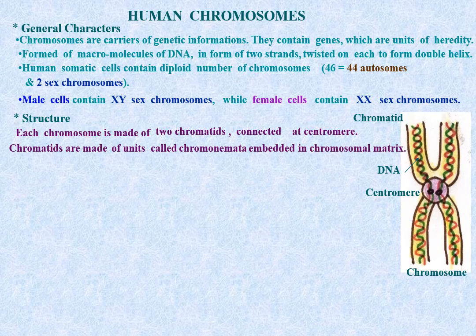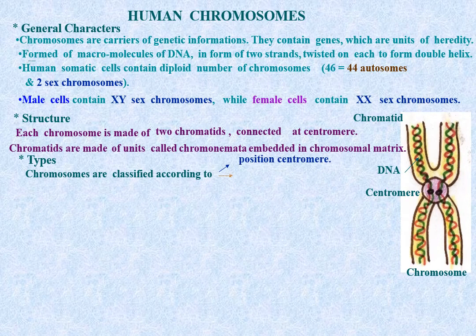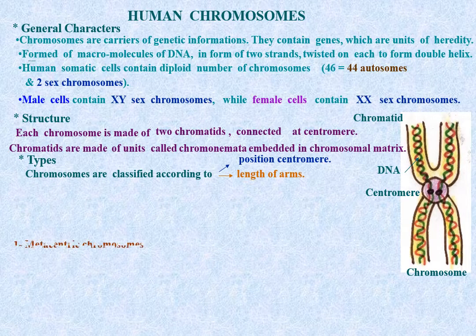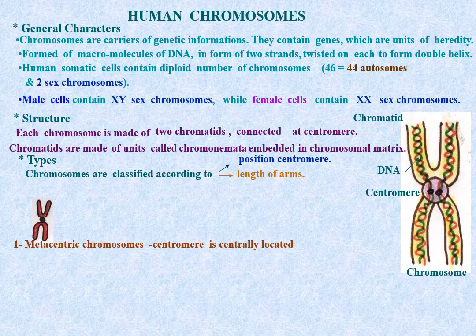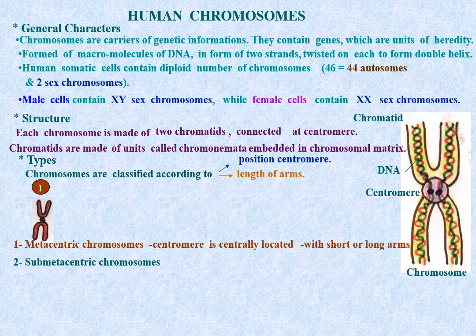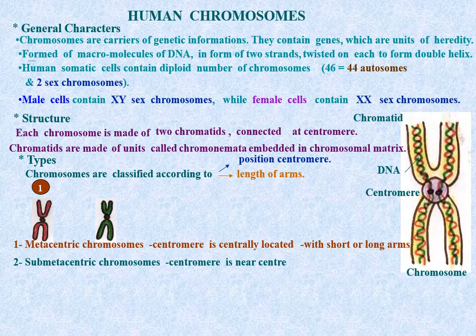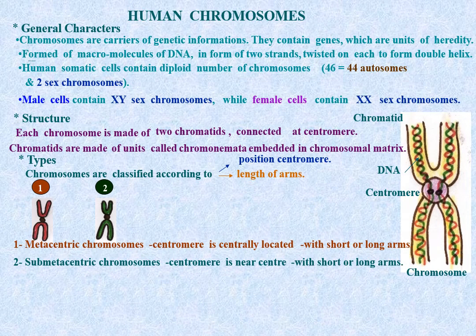Types: chromosomes are classified according to the position of the centromere and the length of the arms. Metacentric chromosomes: the centromere is centrally located; it may have short or long arms. Sub-metacentric chromosomes: the centromere is found near the center; it may also have short or long arms.